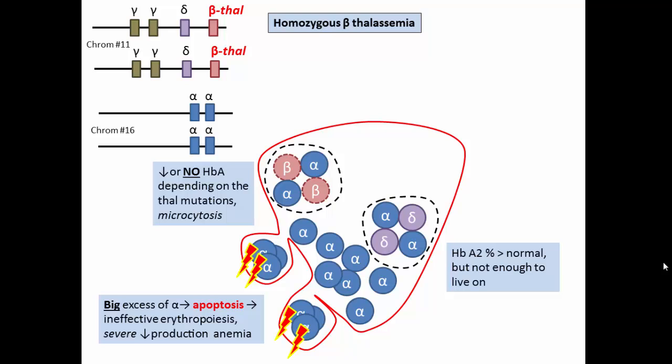Homozygous beta thalassemia is basically a disorder that requires lifelong transfusion. If not transfused, these patients survive based on how much compensatory fetal hemoglobin they can make, although this is rarely enough to support even a minimally functional lifestyle.